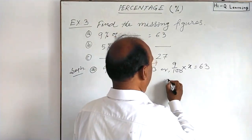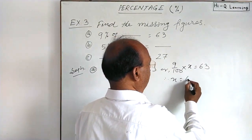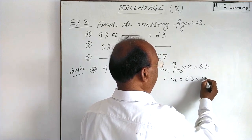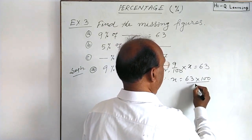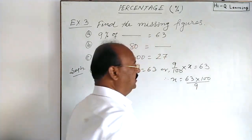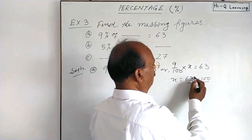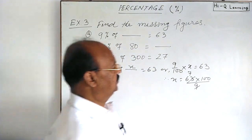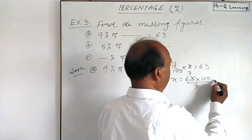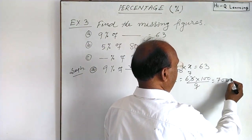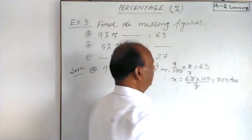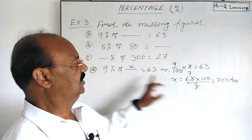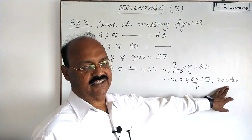Therefore, x equals 63 × 100 ÷ 9. Simplify it: 7 × 100 = 700. So x equals 700. This is the answer, very simple.